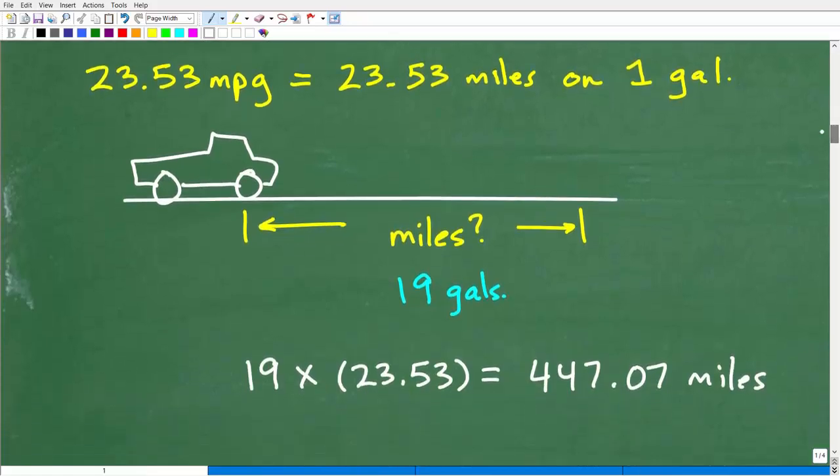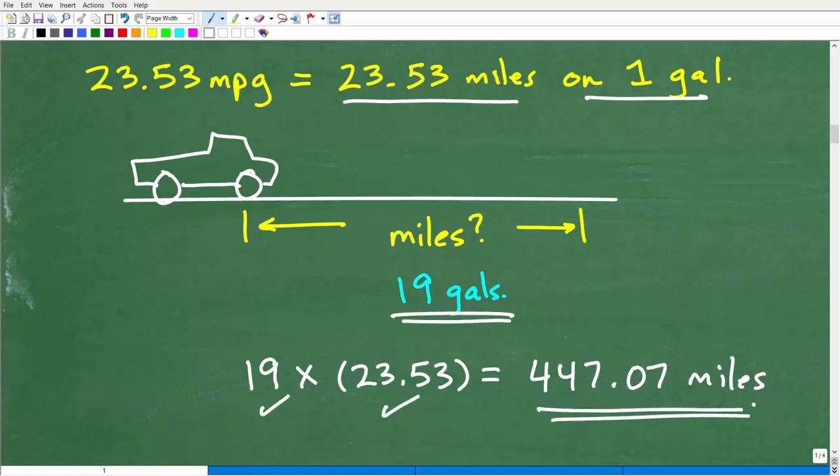So we know that this truck has a miles per gallon rating at this road condition of 23.53 miles per gallon approximately. So that means it goes 23.53 miles on one gallon. So how many miles will it go on 19 gallons? Easy. Just take that 19 and multiply by 23.53, and we are going to get 447.07 miles.